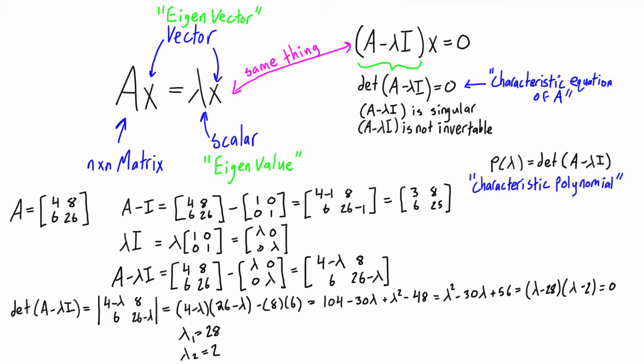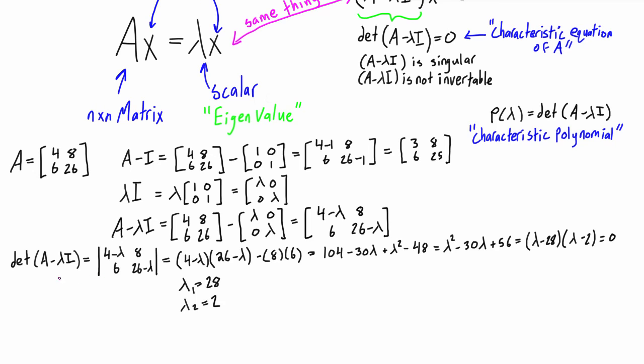The other thing that we can do here is if we want to find the eigenvectors, what we need to do is take the null space of A minus lambda I. And we do this once for each eigenvalue that we have. So in this case, we would have to do it twice.